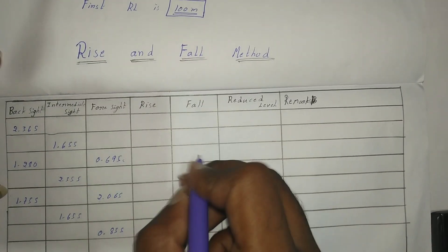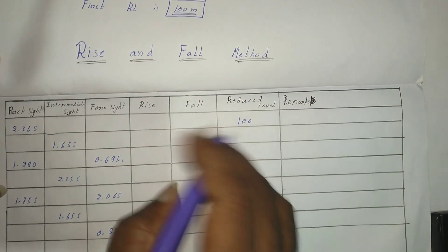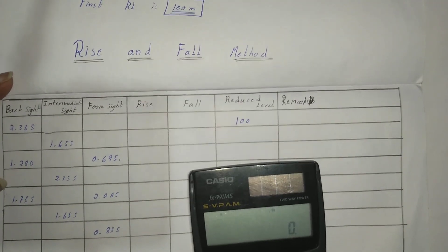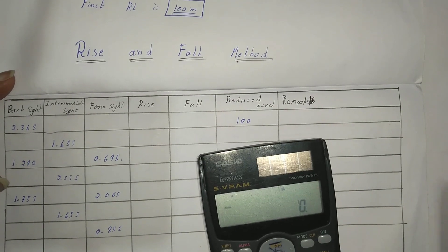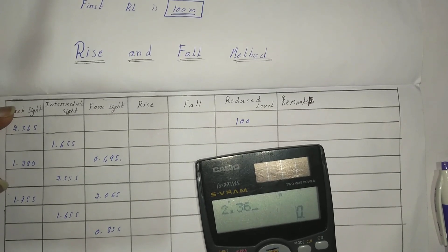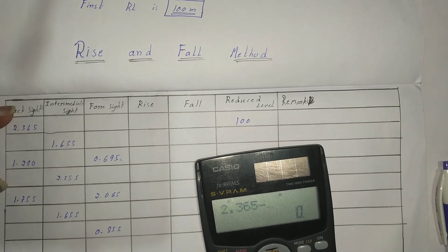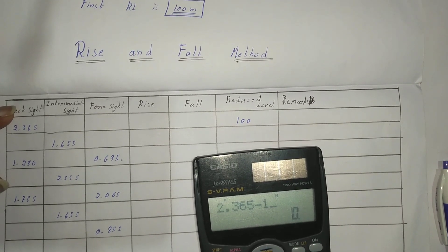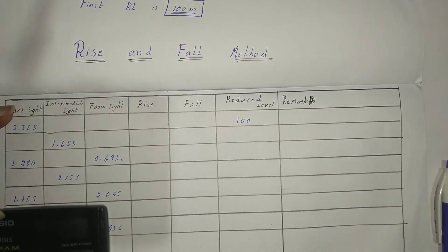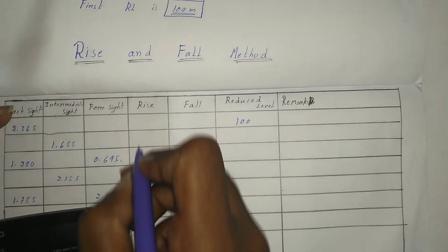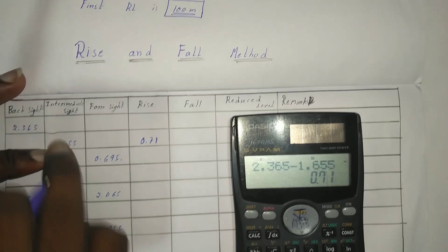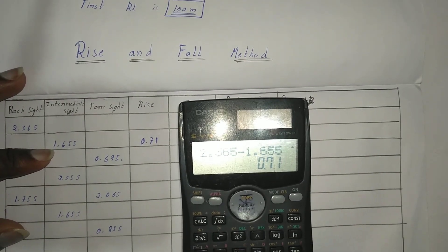The given first RL is 100 meters. Use the cache to find the rise and fall values. Minus the intermediate side, then the value is positive so note it on the rise. Again, the value is positive so note it on the rise.